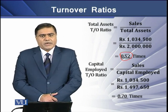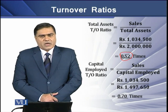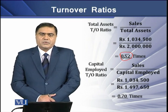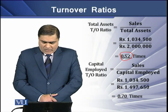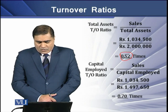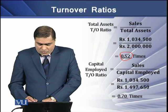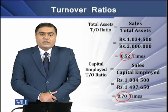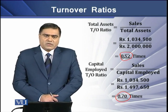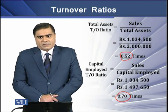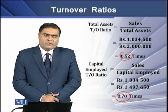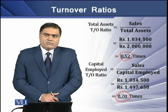Finally, we have capital employed turnover ratio. This ratio tells us how much funds the firm has invested into its assets in order to generate a sale of Rs. 1. If we have sales of 1.0345 million and capital employed of 1.497 million, we get a ratio of 0.70. This means the firm has generated sales equal to only 70 percent of the funds invested in assets, which is apparently not an efficient use of capital employed.